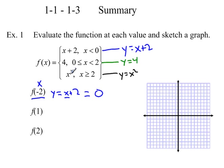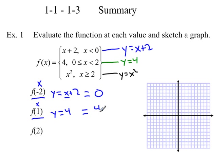Next, f(1): we plug 1 in for x. The first piece is for x less than 0, and the third is for x greater than or equal to 2, so for f(1) we use the second piece. The function is y equals 4 — there's no x — so the value of the function is simply 4.